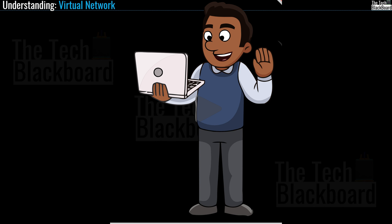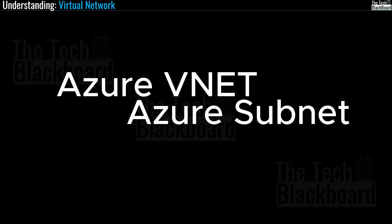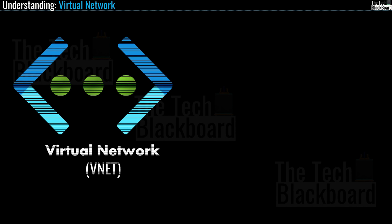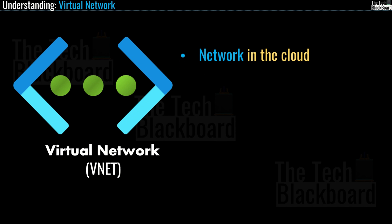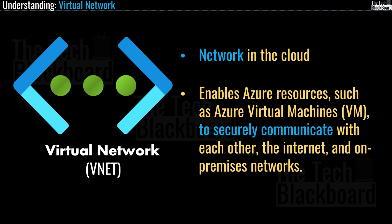For those joining us for the first time, let me give a quick introduction to Azure VNet or Azure Virtual Network and subnets, so that upcoming concepts bind together. Azure Virtual Network is a representation of your own network in the cloud — it is a fundamental building block of your private network in Microsoft Azure. A virtual network enables Azure resources such as Virtual Machines to securely communicate with each other, the internet, and on-premises networks.